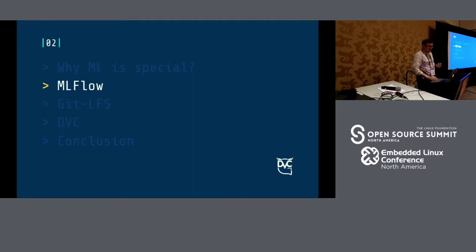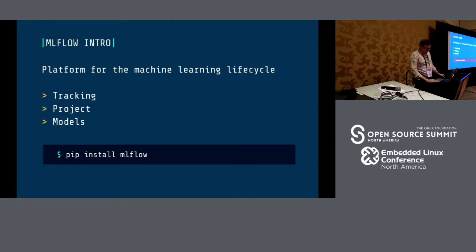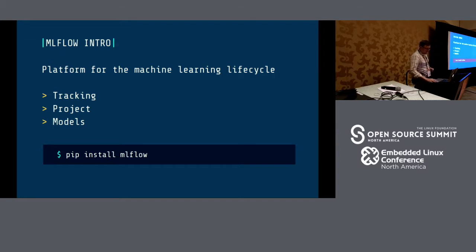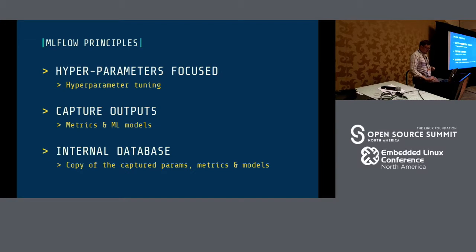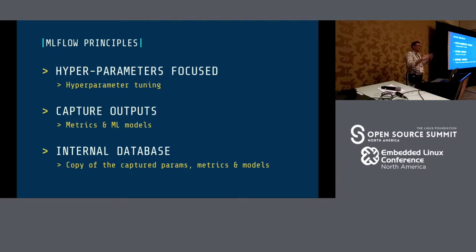The first tool is MLflow. You can easily find and install it. We will focus on the tracking part of the tool, which is very important for the experimentation phase. MLflow is focused on the hyperparameter tuning stage — it gives you the ability to run dozens and hundreds of experiments and store all this information, all the outputs of the experiments, in some internal database.